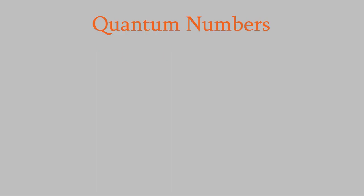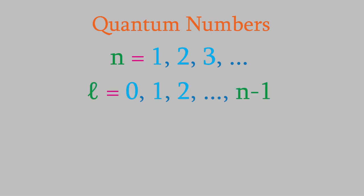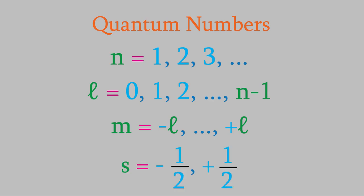The first number is n, which has an integer value of 1 or higher. Next is l, which has an integer value from 0 to n−1. The third quantum number is m, which has an integer value from negative l to positive l. And the fourth and final quantum number is s, which always has a value of positive or negative 1/2.